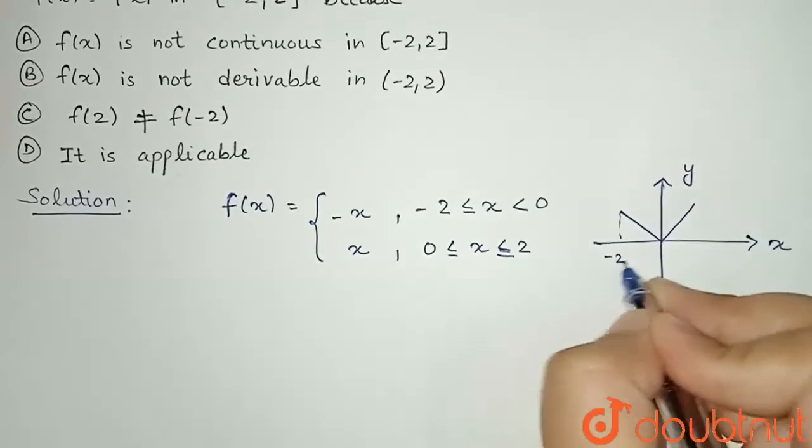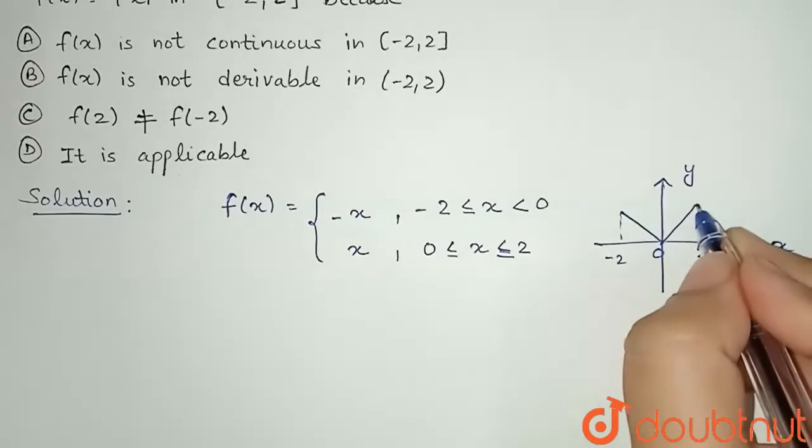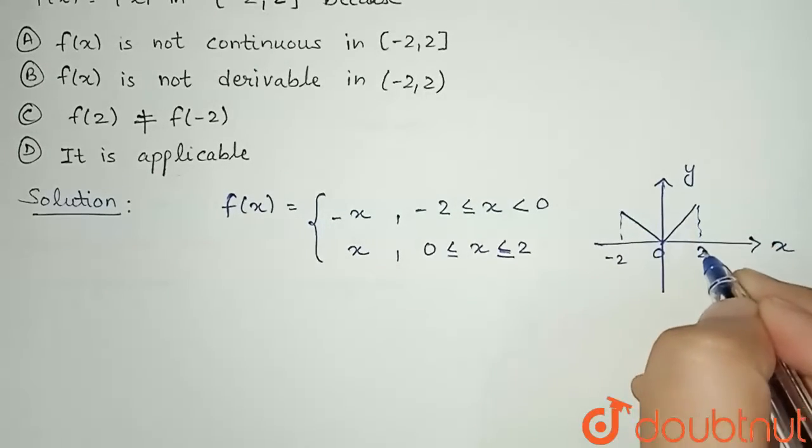So how much we need? Minus 2 to 2. So in minus 2 to 0, graph is of minus x and from 0 to 2, it is of plus x.